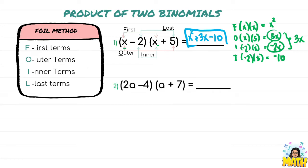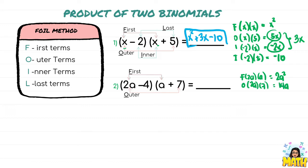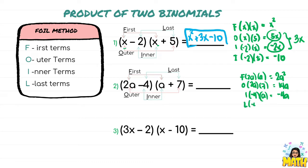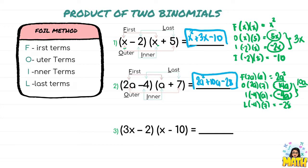Another example: we have two binomials — let's use the FOIL method. First terms: 2a times a gives 2a squared. Outer terms: 2a times 7 is 14a. Inner terms: negative 4 times a is negative 4a. Last terms: negative 4 times 7 is negative 28. We then combine the like terms 14a and negative 4a — 14 minus 4 is 10a. Therefore we have 2a squared plus 10a minus 28.